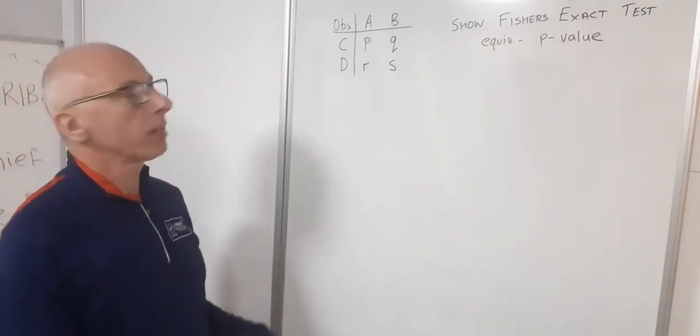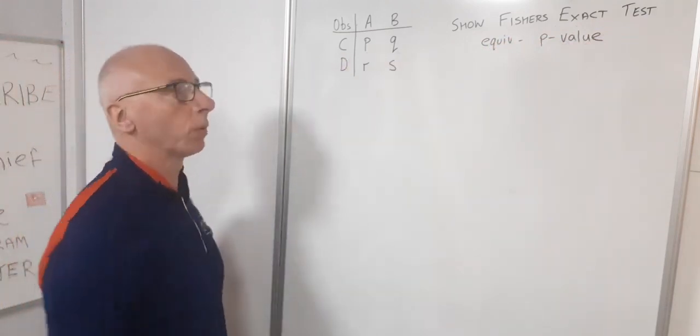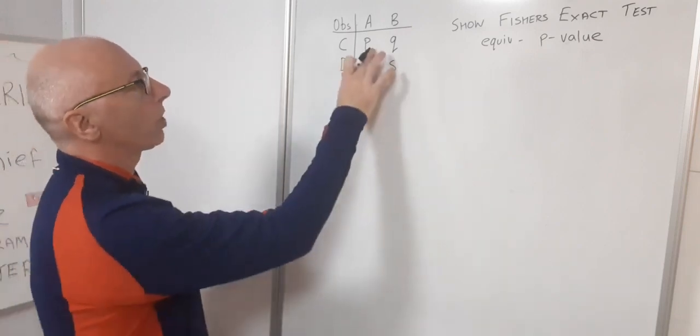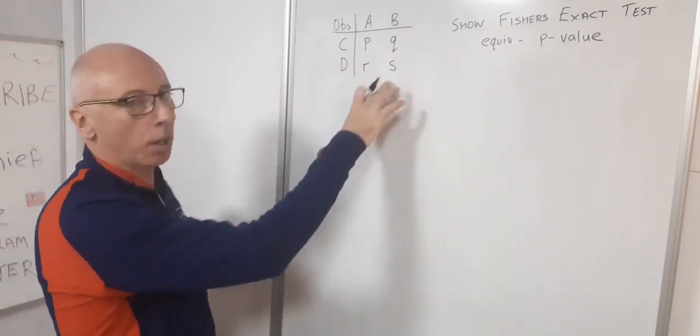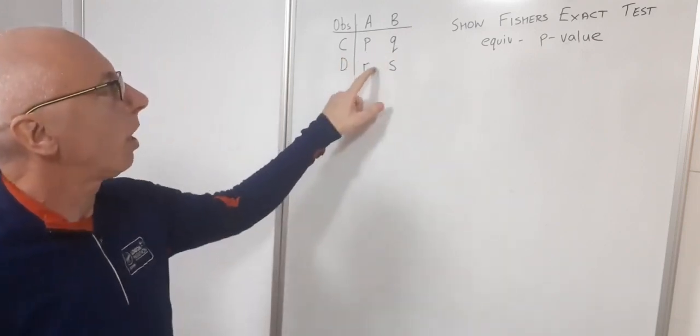Now the Fisher's Exact Test for a 2x2 table, I've labeled up each input in the observation as P, Q, R, and S.